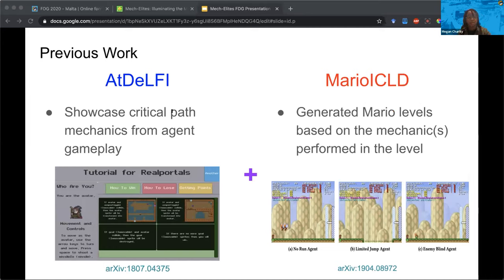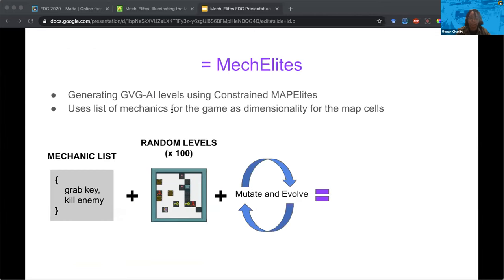We combined the concepts of two previous projects done by my co-authors. The first, Adelphi, which stands for Automatically Designing Legible Full Instructions for Games, looked to generate tutorial levels for games. And the second project, Mario ICLD, generated Mario levels through mutation and crossover of pre-made Mario levels, and these levels were assigned to MAP-Elites cells based on the mechanics performed by an agent.